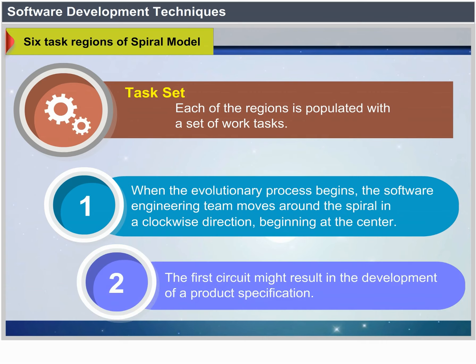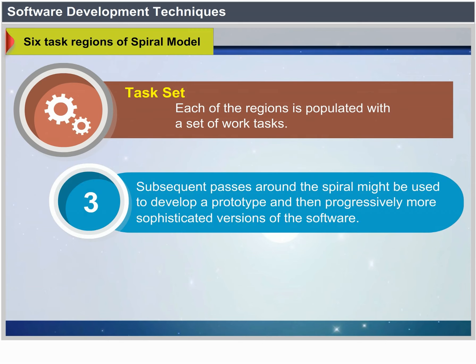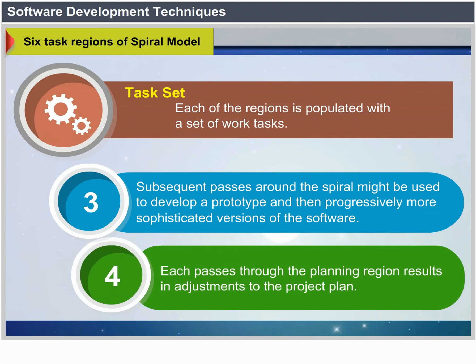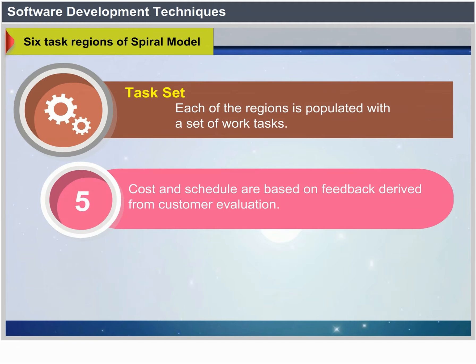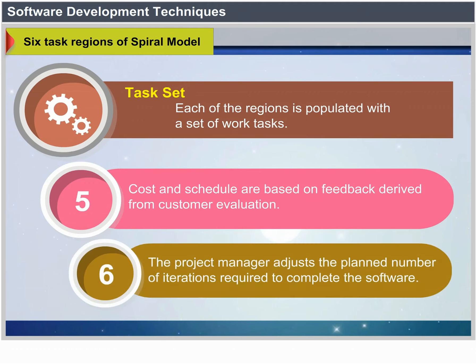While the evolutionary process begins, the software engineering team moves around the spiral in a clockwise direction beginning at the center. The first circuit might result in the development of a product specification. Subsequent passes might be used to develop a prototype and then progressively more sophisticated versions of the software. Each pass through the planning region results in adjustments to the project plan, with cost and schedule based on feedback from customer evaluation.